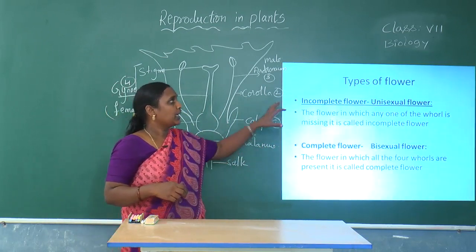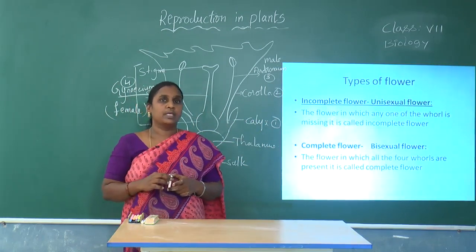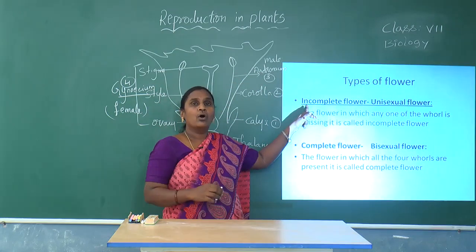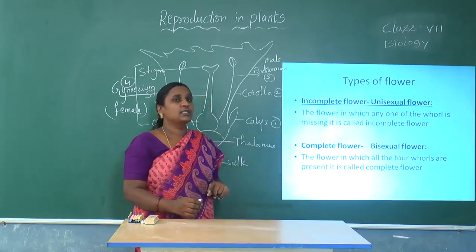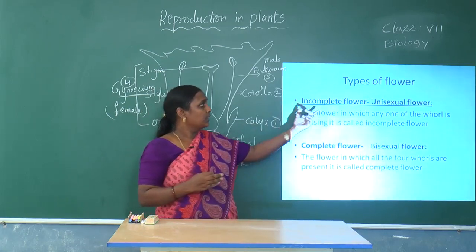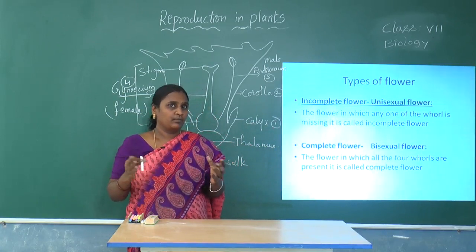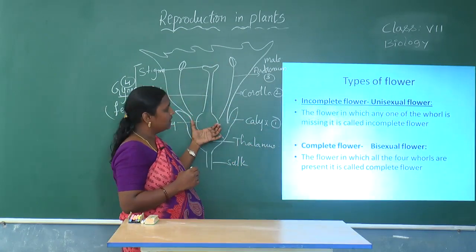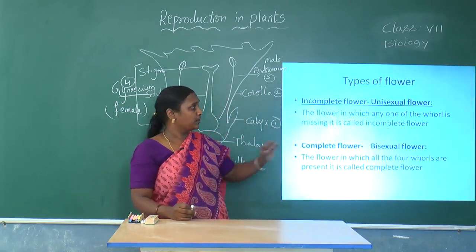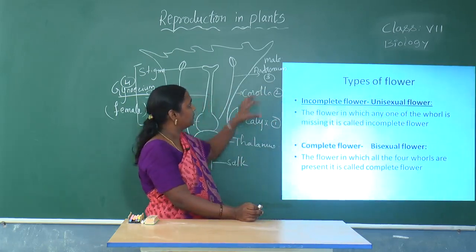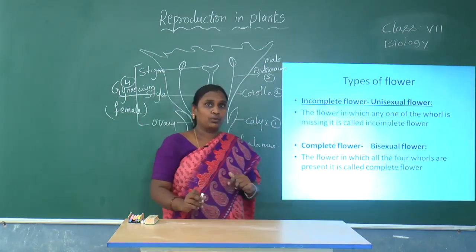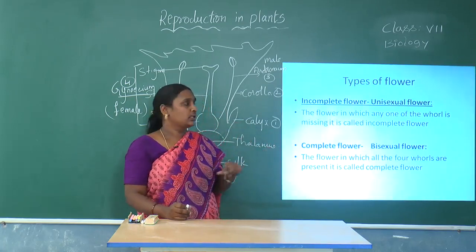Now we will come to the types of flowers. Flowers are of two types based on the essential whorls — androecium and gynoecium. One type is called the incomplete flower, also called the unisexual flower. We see unisexual flowers in bitter gourd, cucumber, and papaya, where male and female flowers are different. A flower in which any one of the essential whorls is missing is called a unisexual flower.